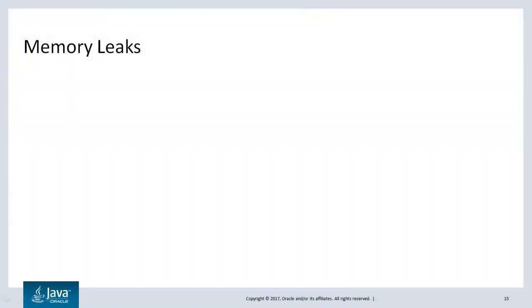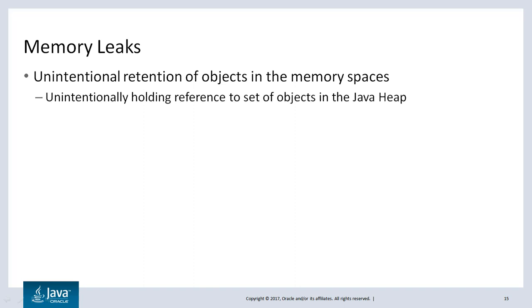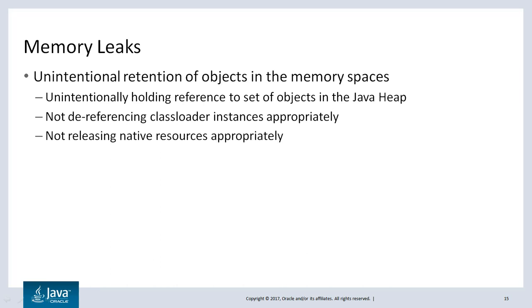Another cause for memory problems is a memory leak, which means that the application is unintentionally holding references to some of the objects in memory spaces. For example, applications might hold references to a set of objects in the Java heap, or might not be clearing class loader references when it should, or might not be releasing native resources appropriately.